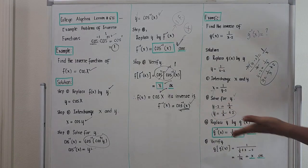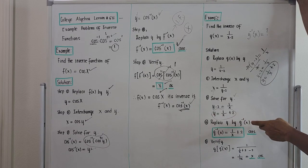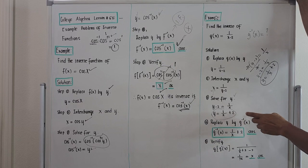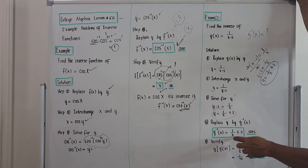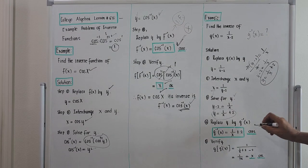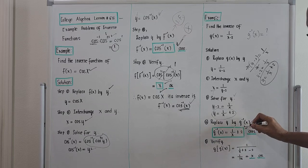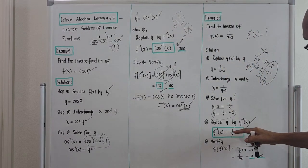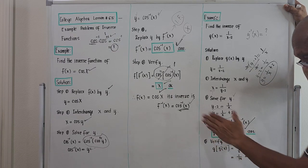Step number four: replace y by g to the minus one of x, because this is actually our answer. So g to the minus one of x equals one over x plus two. The inverse function of g of x, which is one over x minus two, is one over x plus two. Let's verify: we substitute the computed inverse function one over x plus two in place of x in the original function.